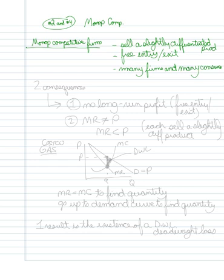So this has two significant consequences, these aspects. The first would be is that there'll be no long run profit. This is because of free entry and exit, which will show why that exists.